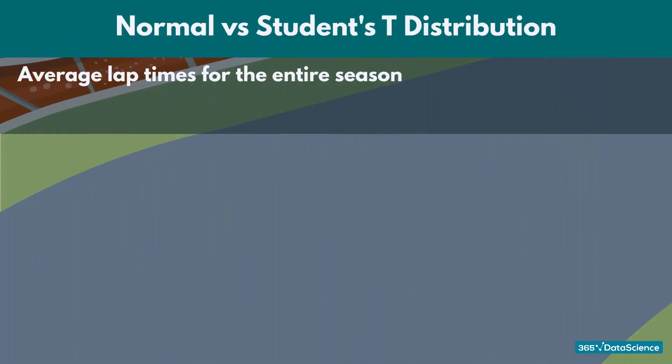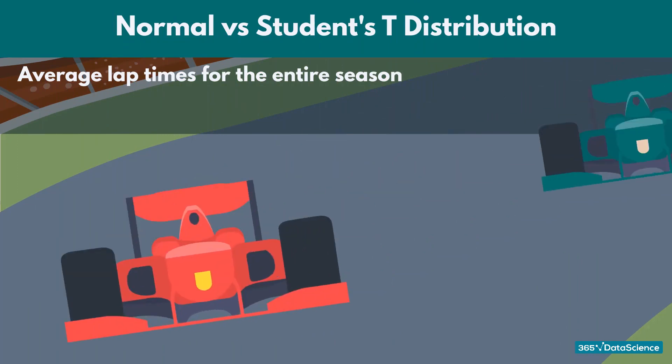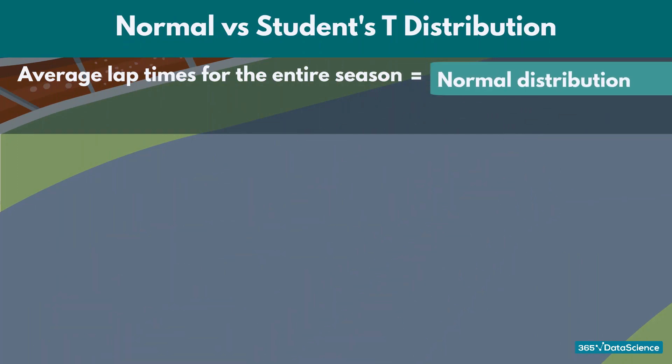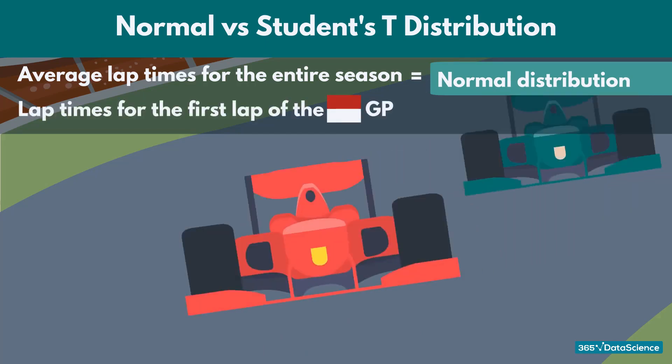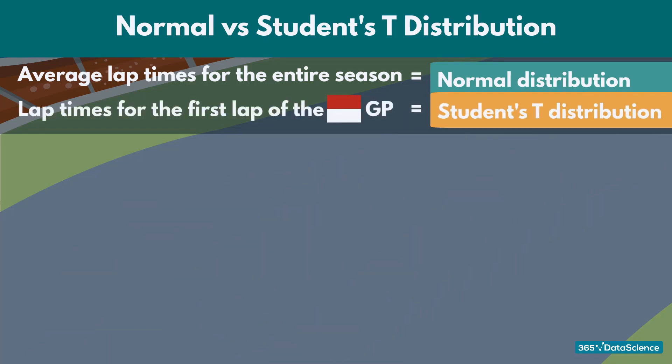For instance, the average lap times for the entire season of a Formula 1 race follow a normal distribution, but the lap times for the first lap of the Monaco Grand Prix would follow a student's t-distribution.